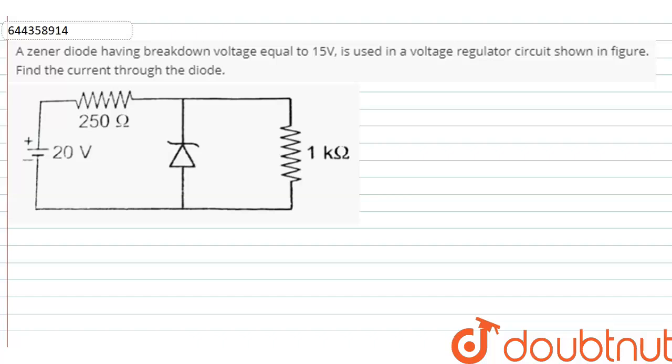The question is: a Zener diode has a breakdown voltage equal to 15 volts and is used in a voltage regulator circuit shown in the figure. Find the current through the diode.